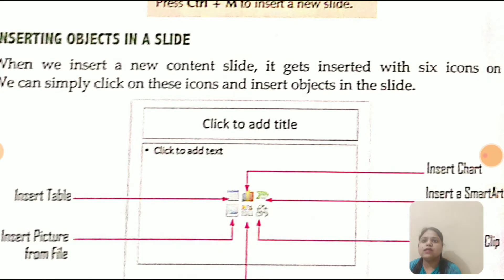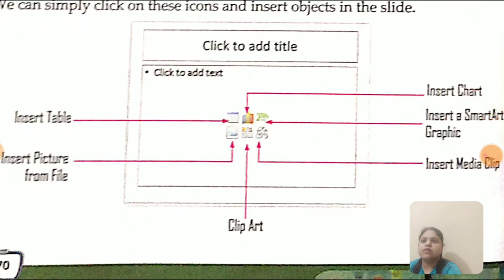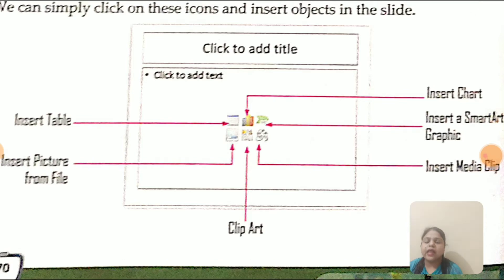Next is inserting objects in a slide. When we insert a new content slide, it gets inserted with six icons on it. We can simply click on these icons and insert an object in the slide. The six icons are: Insert Table, Insert Picture from File, Clip Art, Insert Chart, Insert a SmartArt Graphic, and Insert Media Clip. You can click on any of these six icons to add the corresponding object to your slide.